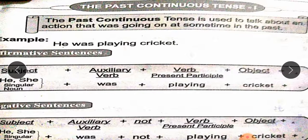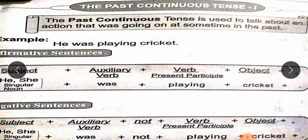Past Continuous Tense Part 1 — Definition: The past continuous tense is used to talk about an action that was going on at some time in the past. Past continuous tense use کیا جاتا ہے ان کاموں کے بارے میں بات کی جائے جو ماضی کے کسی بھی وقت میں ہو رہے تھے۔ Urdu identification: اردو جملوں کے آخر میں رہا تھا، رہی تھی، رہے تھے قسم کے الفاظ آتے ہیں۔